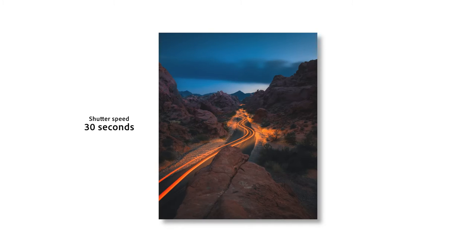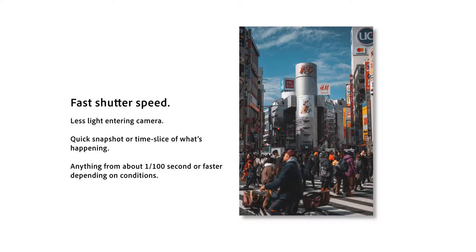Starting with the basics: what is shutter speed? It's basically exactly what it sounds like — it's the speed at which the shutter of the camera closes. A fast shutter speed gives you a shorter exposure, letting in less light. A slower shutter speed gives you a longer exposure and allows more light in. So shutter speed determines how fast or slow you want that freeze frame to be.